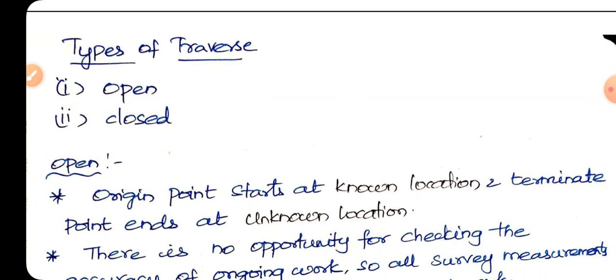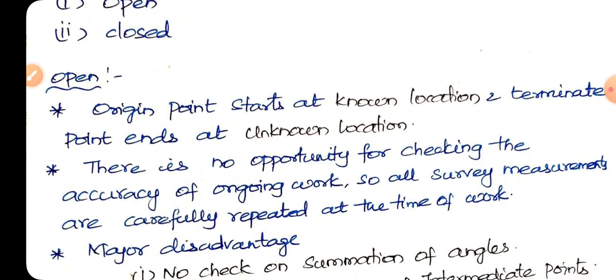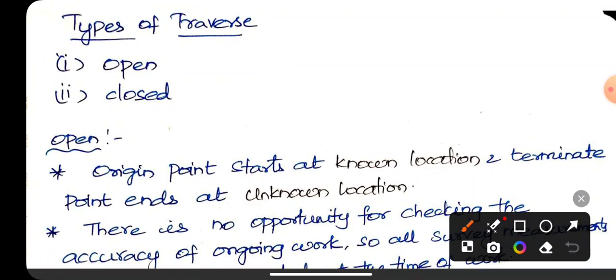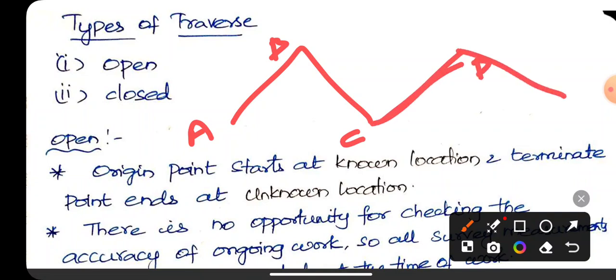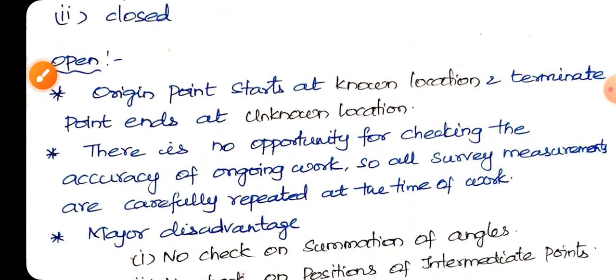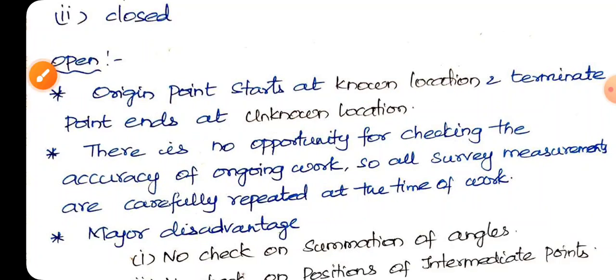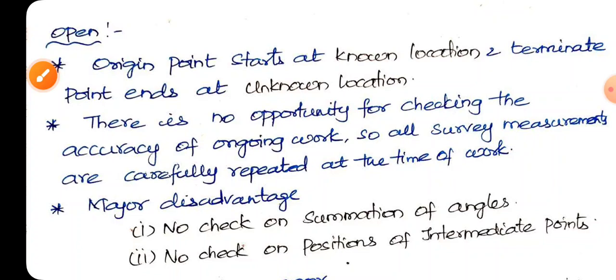There are two types: one is open and one is closed. Open: starting point we know where to go, terminate point we know. Origin point starts at known location, terminate point unknown location. That is open traverse.